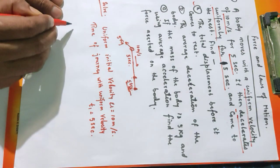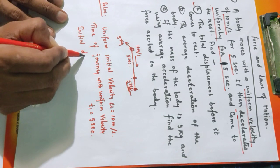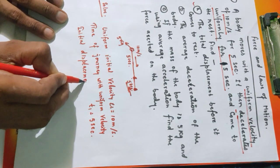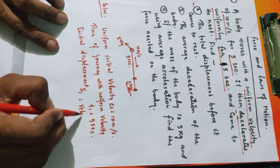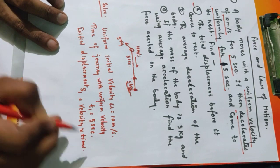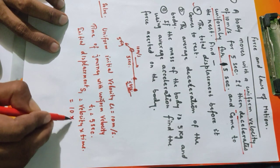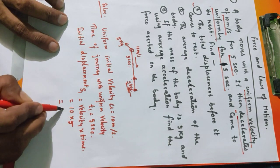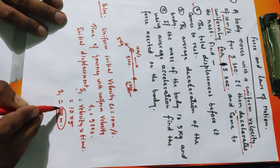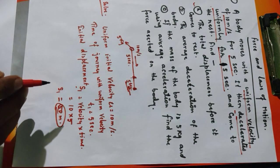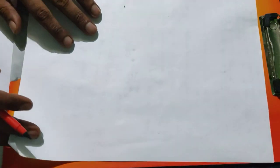Initial displacement S1 निकालते हैं। S1 = velocity × time। Velocity कितना दिया हुआ है — 10, और time कितना दिया हुआ है — 5। तो displacement S1 = 10 × 5 = 50 meter। Please take a screenshot.